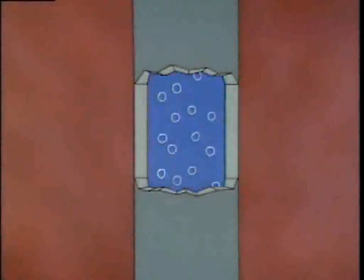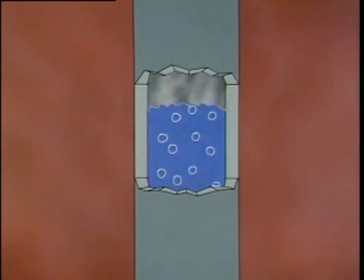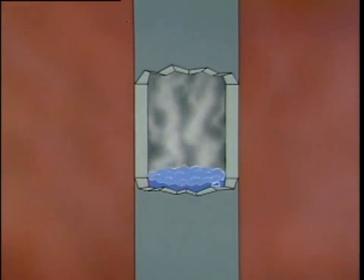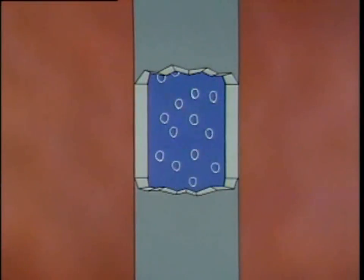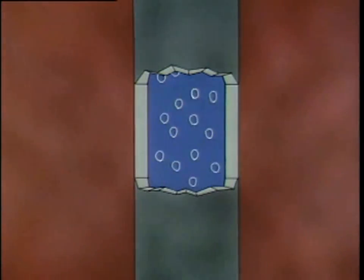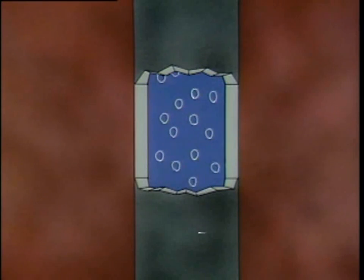A heat transfer problem can also occur if the feed water supply stops for any reason. Without a continuous supply of feed water, the boiler may boil dry. With no water to remove the heat, the tube metal rapidly overheats and severe damage may result. In boilers that burn coal or oil, another problem that can affect heat transfer is the buildup of soot, created by ash and unburned fuel particles in the combustion gases.